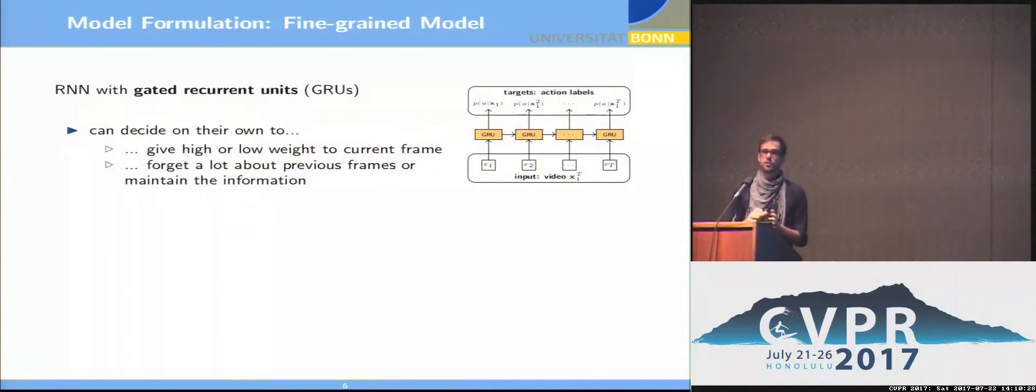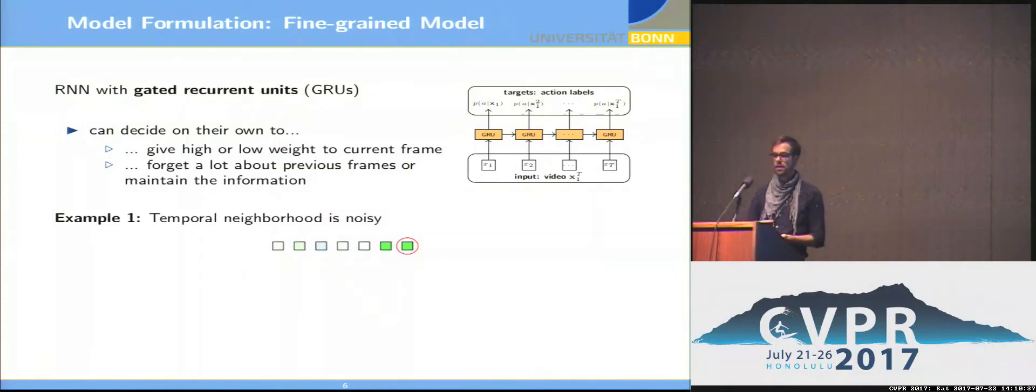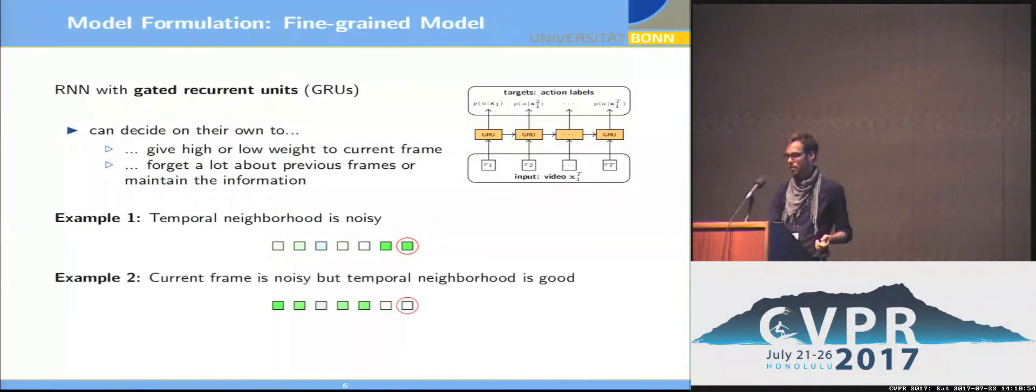Why do we use these gated recurrent units? They have a huge advantage. They can give a high or low weight to the current frame, and they can also decide to give a high or low weight to the temporal context that has been seen. Let's make a brief example. We have here the current frame circled in red, and it's clearly a frame belonging to this green action class. The gated recurrent unit can decide to put a high weight on this frame and get a clear probabilistic output. You may now argue a frame-wise model would be able to do the same, of course.